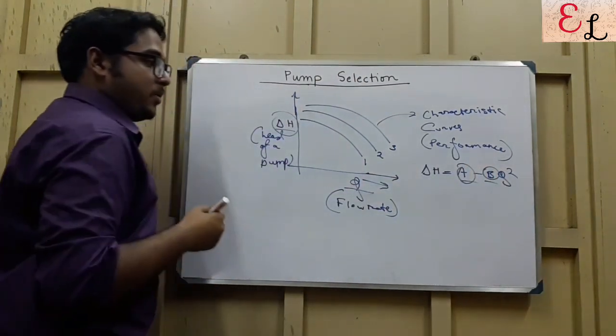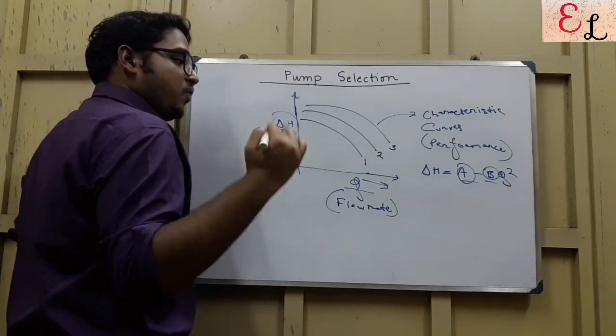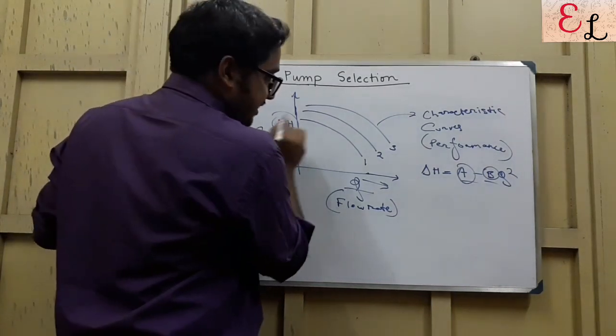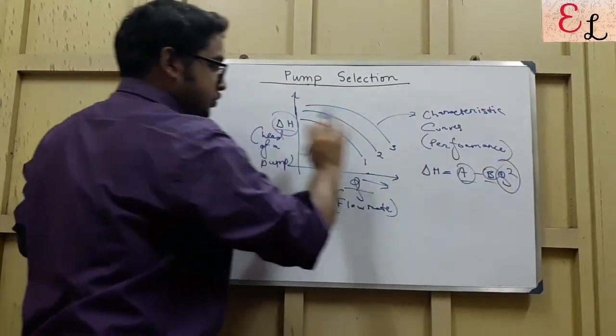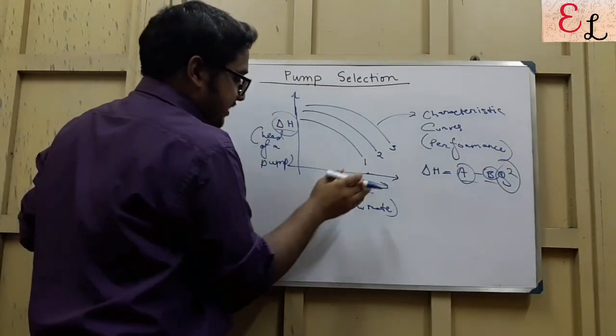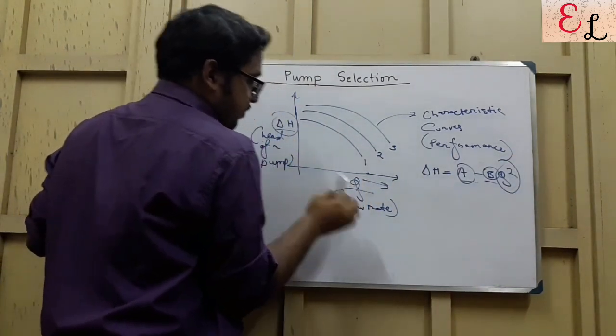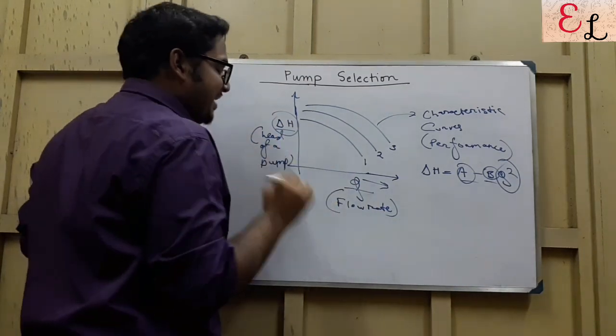These two parameters vary from pump to pump. For pump 1, it may be A1, B1. For pump 2, A2, B2. For pump 3, A3, B3. But the nature will be Q square dependent, negative. In a negative manner, that is with the increase of Q, H will decrease in a characteristic curve.